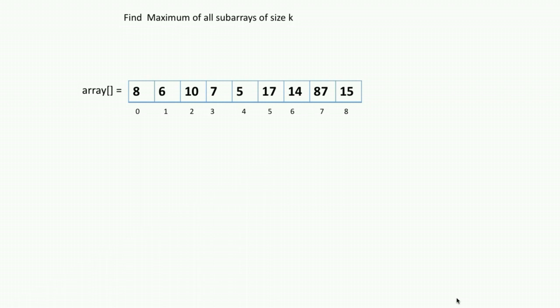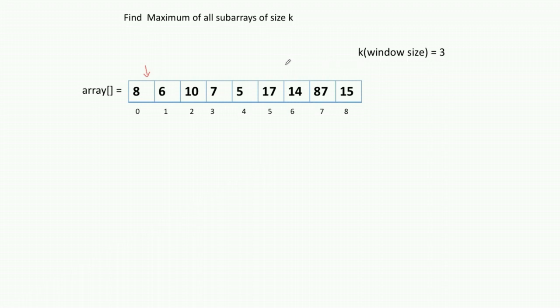Let's discuss one very important problem. You are given an integer array and a window size of k, and we need to find the maximum value for each and every continuous subarray of size k. This is the integer array given as input with a window size of 3. I need to find out the maximum value in each and every subarray of length 3. One such subarray is the first one — the maximum value is 10.